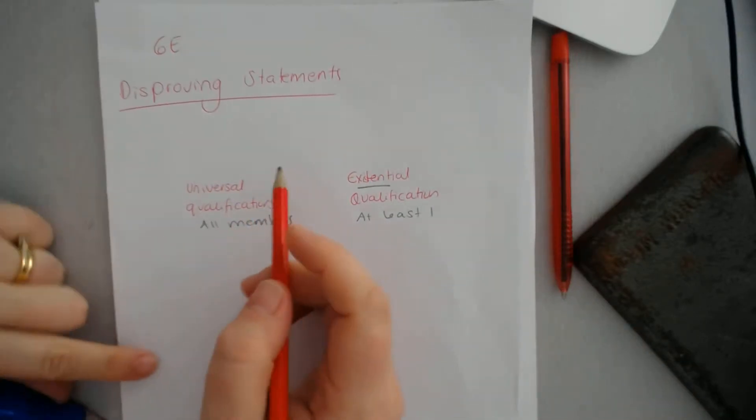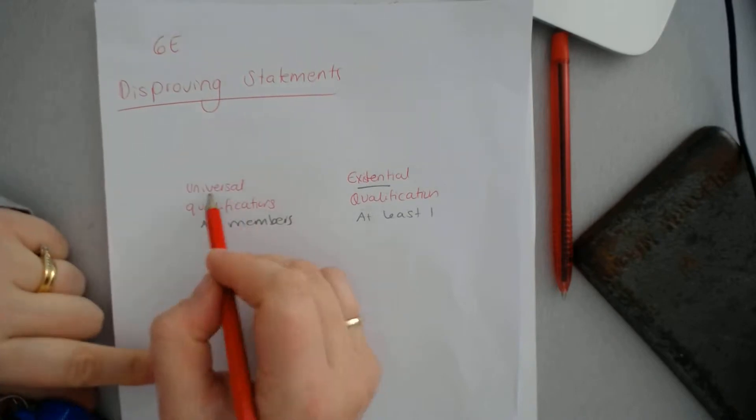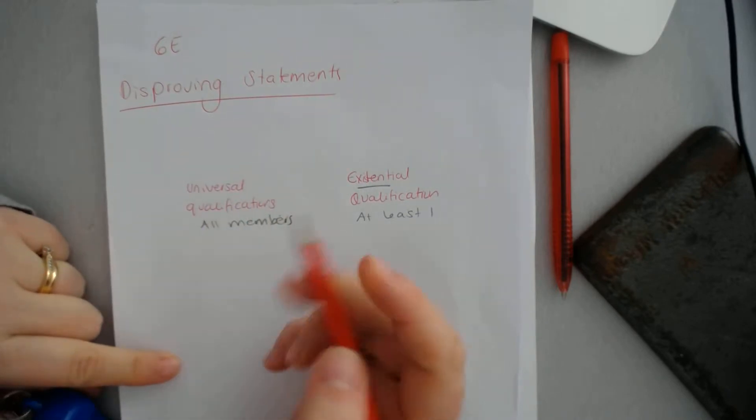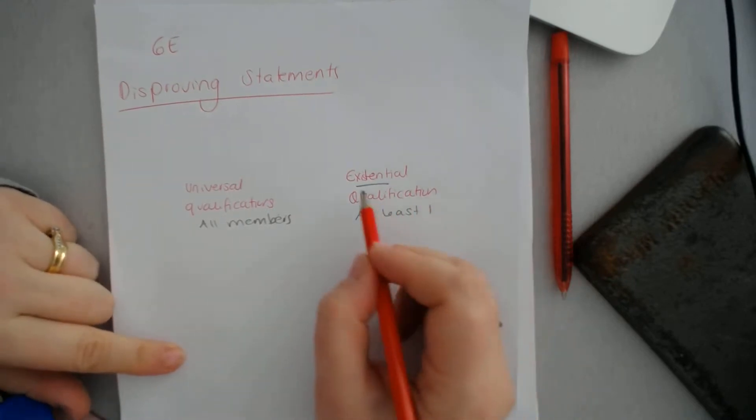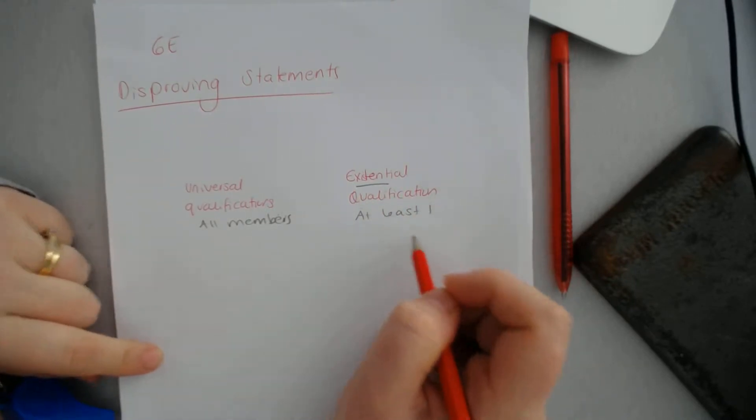Today I want to talk about disproving statements. Before we do, we need to look into two things: the idea of a universal quantifier, which means this applies to all in a set, and an existential qualification, so that it applies to at least one.